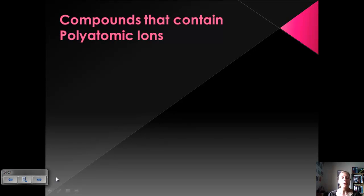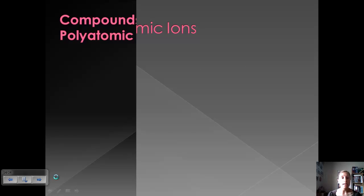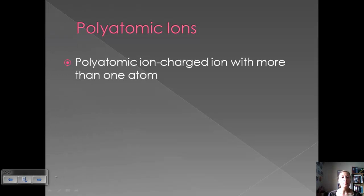Today we're going to continue our discussion of our unit on nomenclature and talk about compounds that contain polyatomic ions. So first let's talk about what a polyatomic ion is. The prefix poly means more than one. And so usually when we've been talking about ions, we've been talking about a charged atom. Well, a polyatomic ion is more than one atom, and overall the unit is charged.